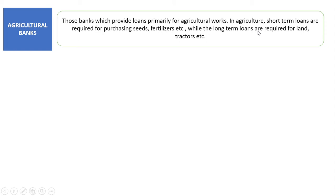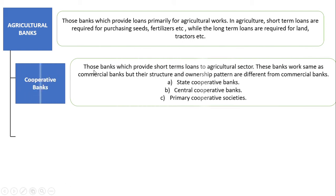Long-term loans are for farmers who want to purchase land or a tractor. Agricultural banks are divided into two parts. The first is cooperative bank — those banks which provide short-term loans to the agricultural sector. These banks work similarly to commercial banks, collecting deposits and lending money.